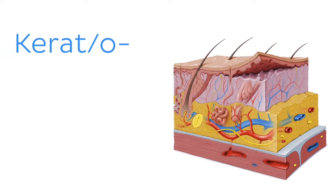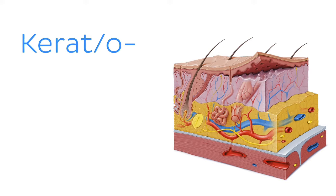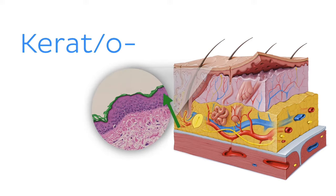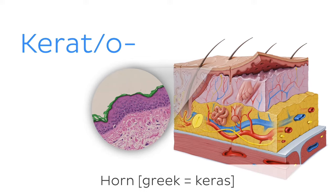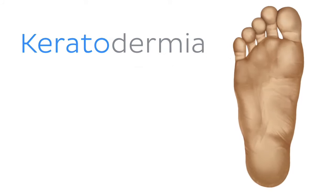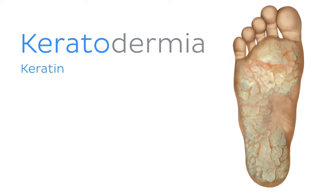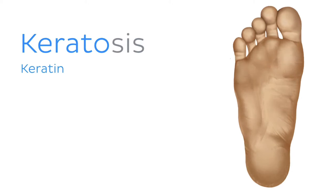Next up is kerat or kerato, which refers to the tough keratinized outermost layer of the skin and comes from the Greek word for horn. Two important terms arise from this root: keratoderma, a group of disorders resulting in diffuse or localized excessive formation of keratin in the skin; and keratosis, a group of diseases causing hard growths on the skin like warts or calluses.